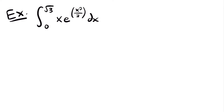For our next example, we have a definite integral — the integral from 0 to the square root of 3 of x times e to the power of x squared divided by 3 times dx. We are going to want to use u substitution because we have e to the power of some function that is not just x. When you do that, you want to make sure that the derivative of that exponent is somewhere in your function.